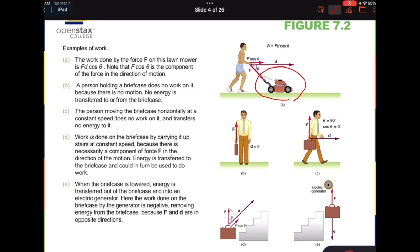But even if he's moving, because the force is upward and displacement is horizontal, so the angle between force and displacement is equal to 90 degrees. And we know cosine 90 is equal to 0. That's why the work done by this person on the briefcase is still 0.